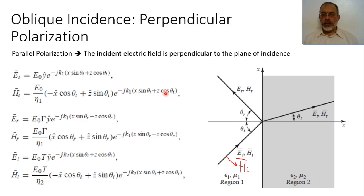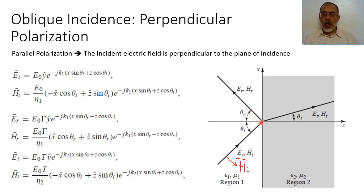The reflected electric field is assumed to be in the Y direction as well, propagating in the direction of theta reflected. The magnitude of the reflected field is gamma multiplied by E0, and it propagates with wave function E to the power minus jK1 X sine theta reflected. Here KX equals K1 sine theta reflected, but KZ equals minus K1 cosine theta reflected — forward in X but backward in Z.